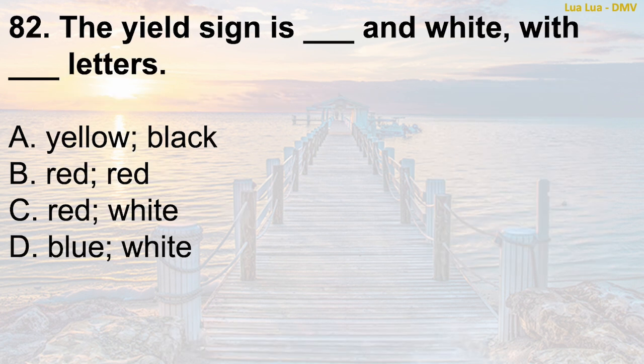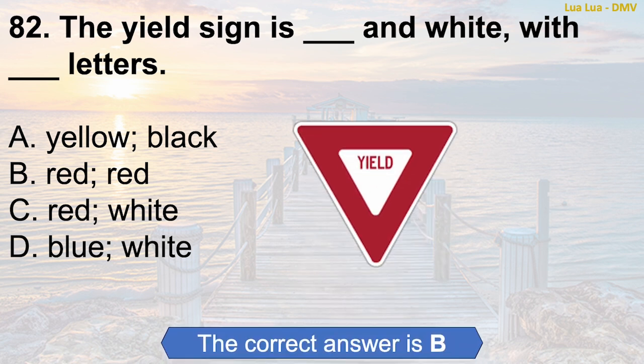Question 82: The yield sign is blank and white with blank letters. A. Yellow, black. B. Red, red. C. Red, white. D. Blue, white. The correct answer is B: Red, red.